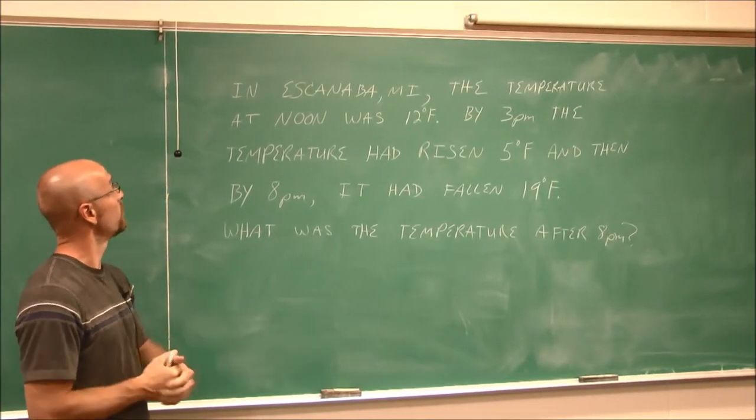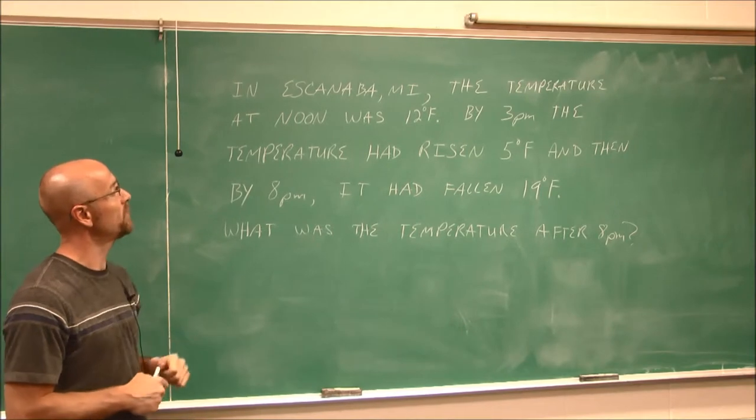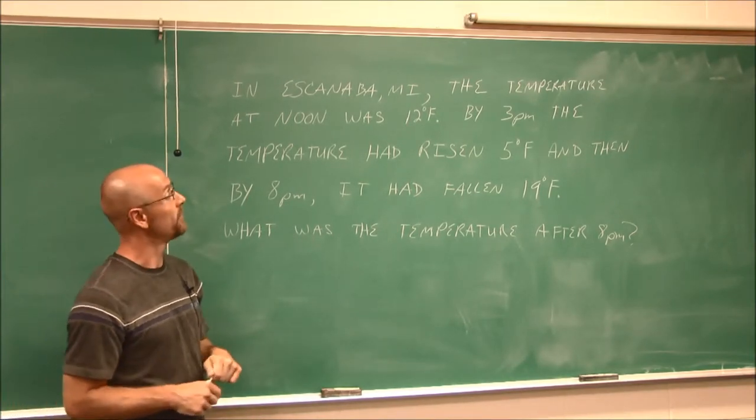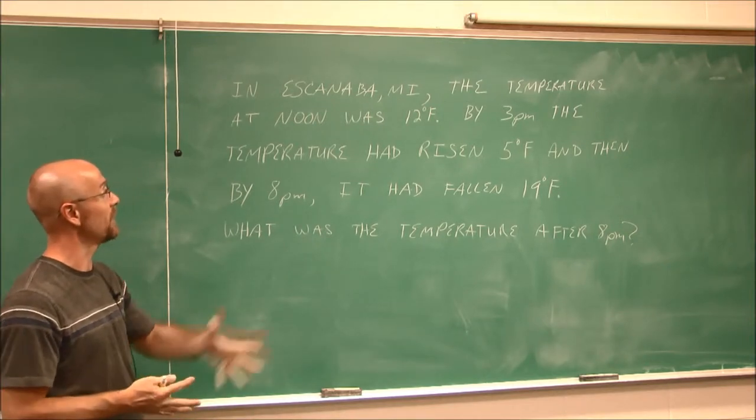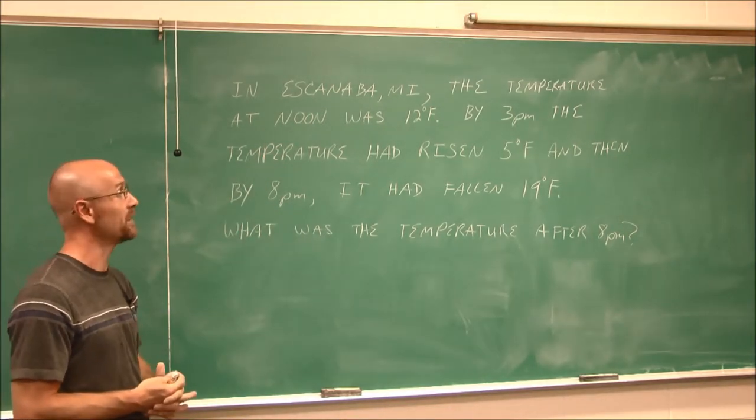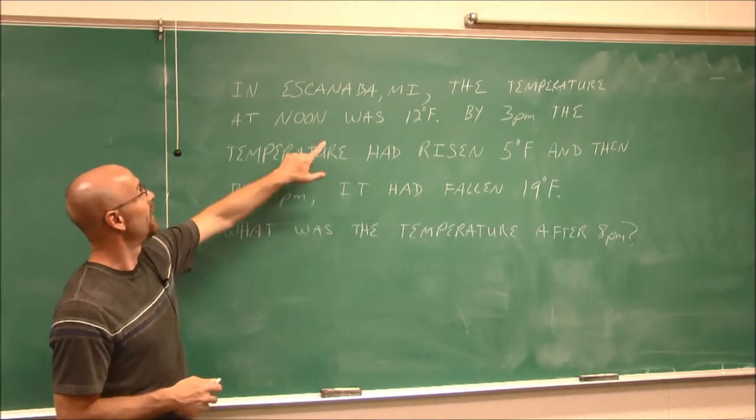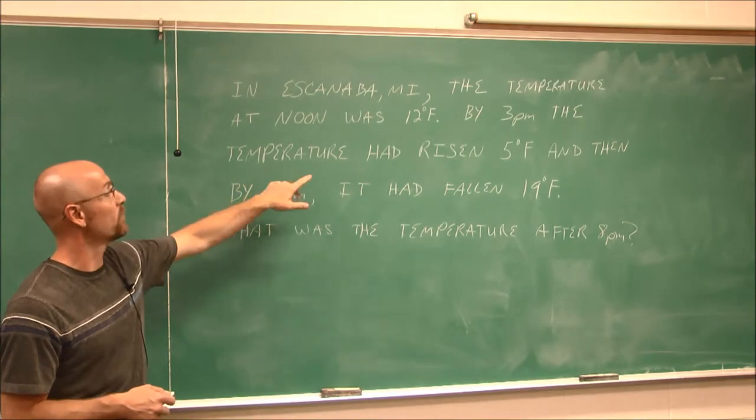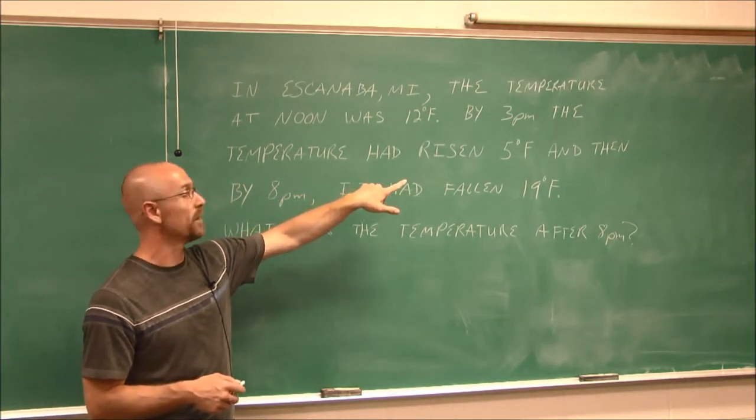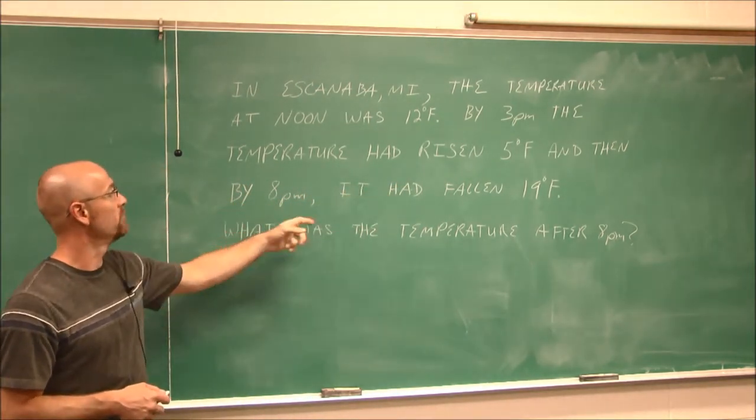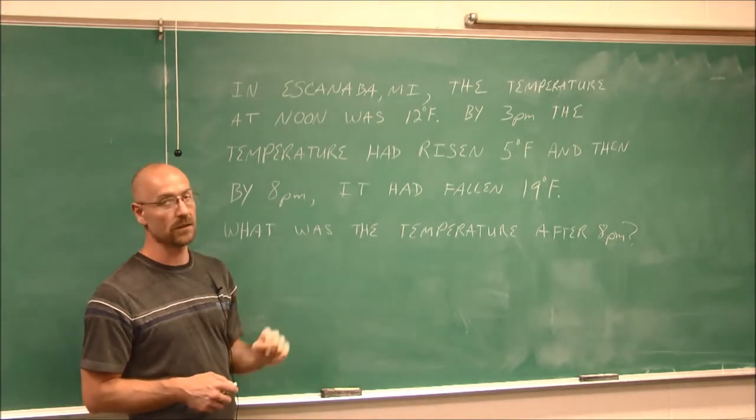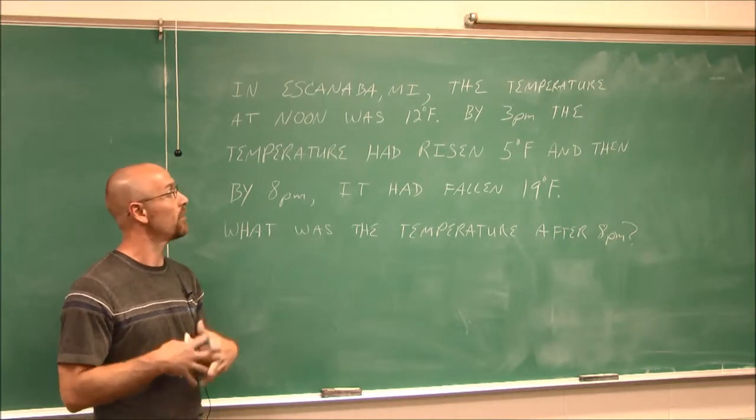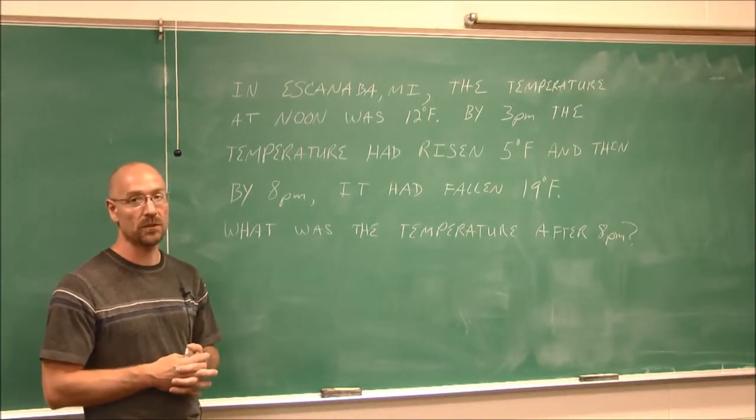This application problem from right here in the UP, in Escanaba, Michigan, the temperature at noon was 12 degrees Fahrenheit. And if anyone's familiar with the Upper Peninsula, that's a nice warm spring day, believe it or not. The temperature was 12 degrees Fahrenheit. By 3 p.m., the temperature had risen 5 degrees Fahrenheit, and then by 8 p.m., it had fallen 19 degrees Fahrenheit. What was the temperature after 8 p.m.?